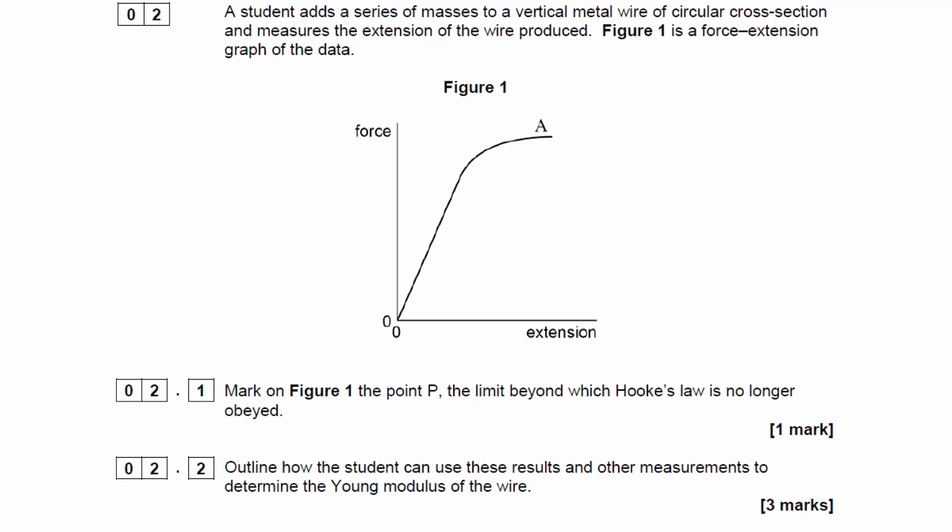A student adds a series of masses to a vertical metal wire of circular cross-section and measures the extension of the wire produced. Figure 1 is a force extension graph, so force against extension.